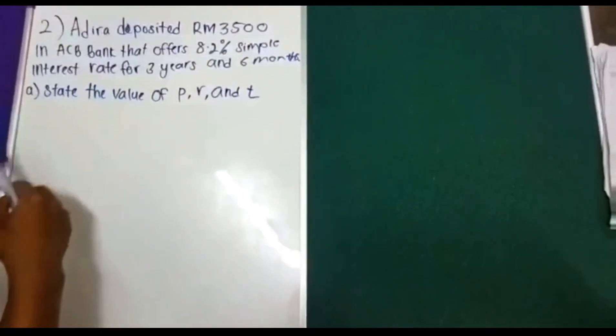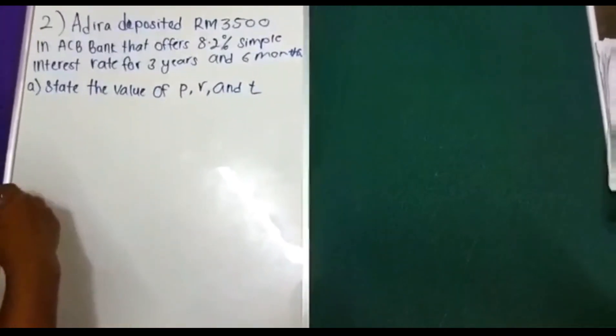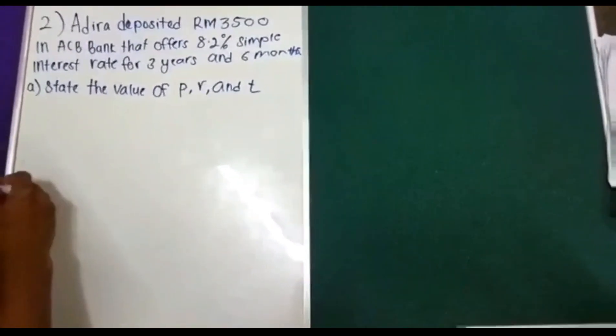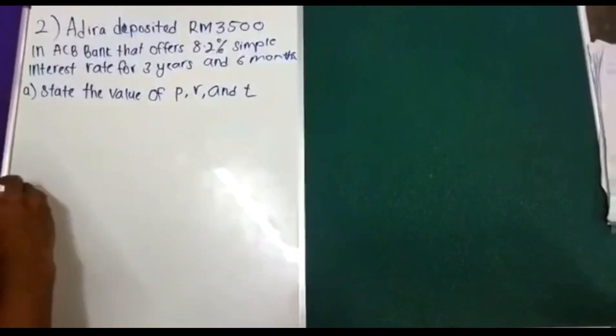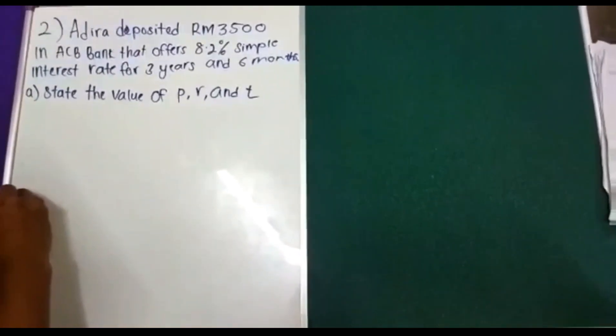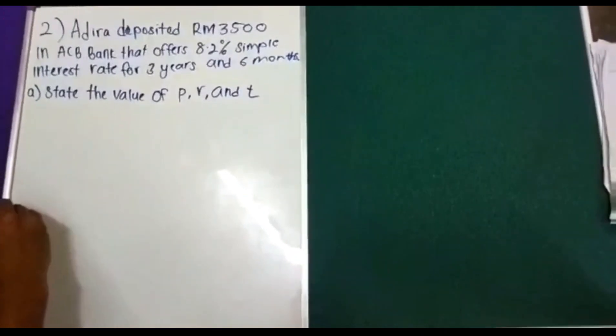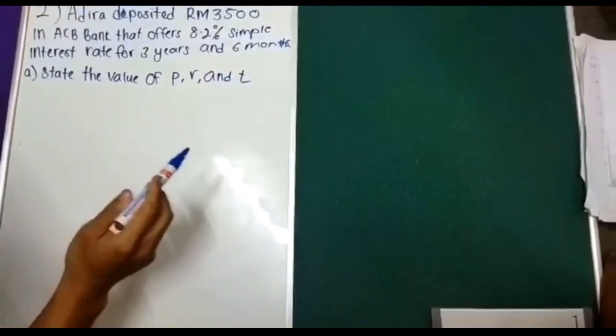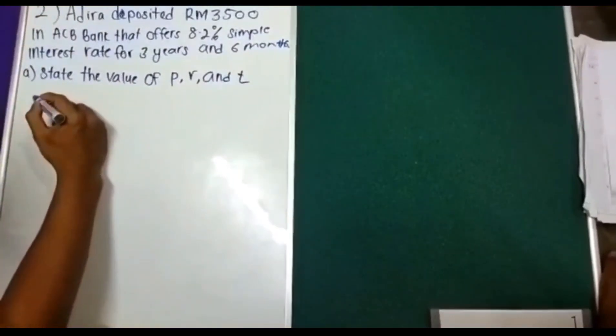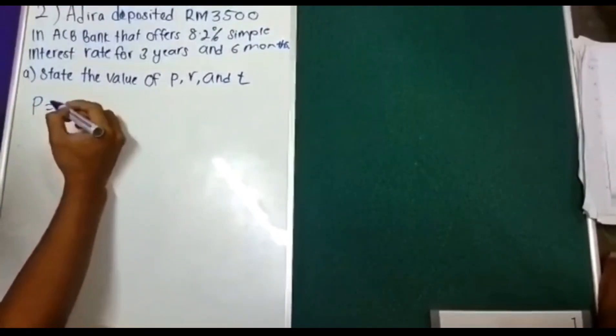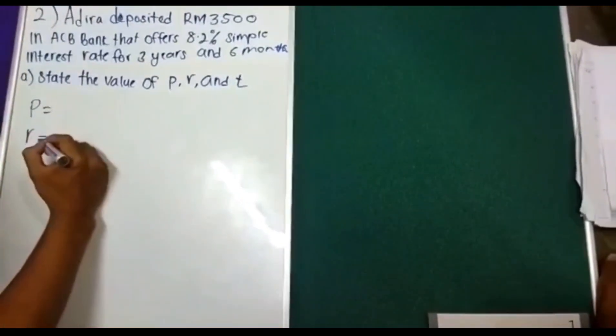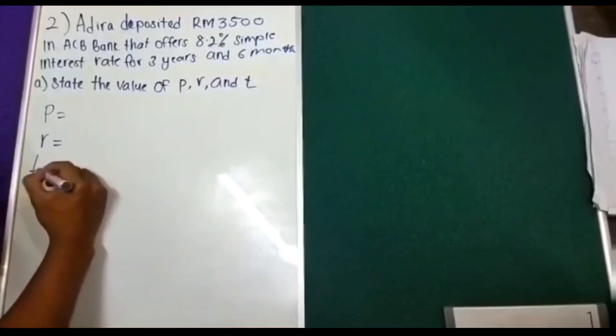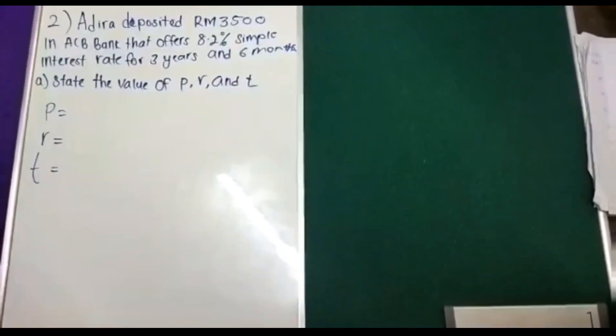Question 2 for simple interest. Adira deposited RM3,500 in ACB Bank that offers 8.2% simple interest rate for 3 years and 6 months. Question A. State the value of P, R, and T. P is principal amount, R is simple interest rate, T is term in years.